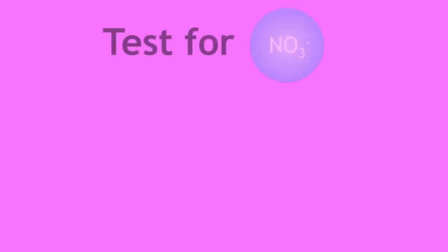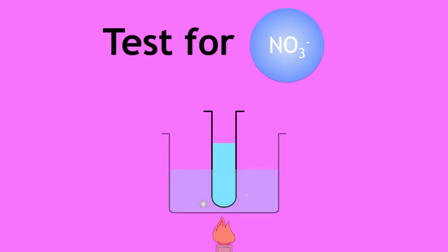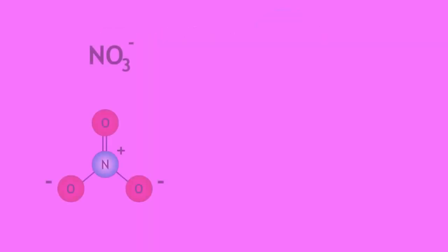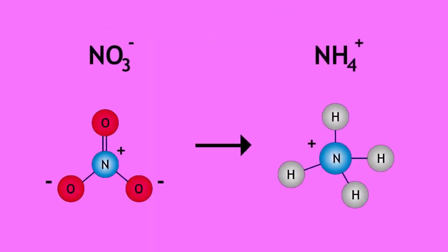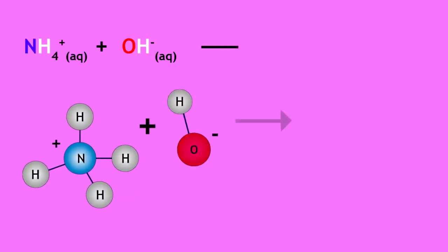To test for nitrates, add sodium hydroxide and aluminum powder and heat gently in a warm water bath. Aluminum powder reduces the nitrate ion to an ammonium ion. The ammonium ion then reacts with hydroxide to release ammonia.